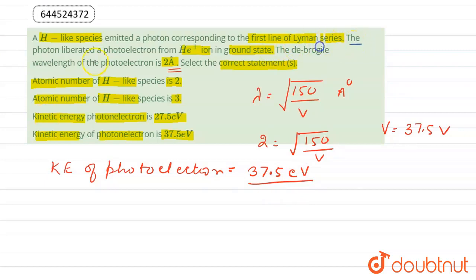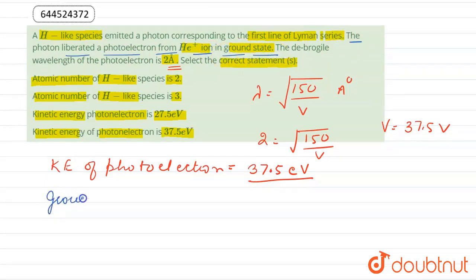In the question, the photon liberated a photoelectron from helium plus 1 ion in ground state. The ground state energy of helium plus 1 ion is minus 13.6 multiplied by z square divided by n square. It is minus 54.4 electron volt.